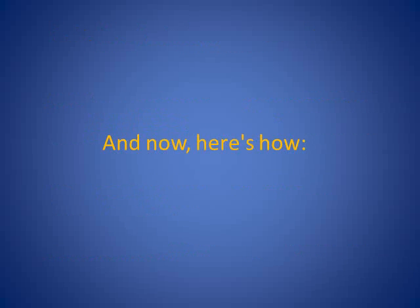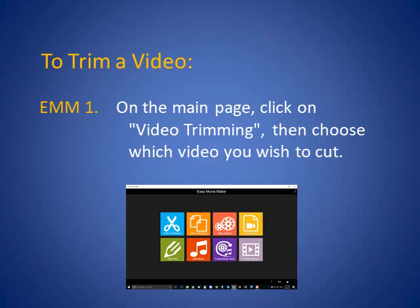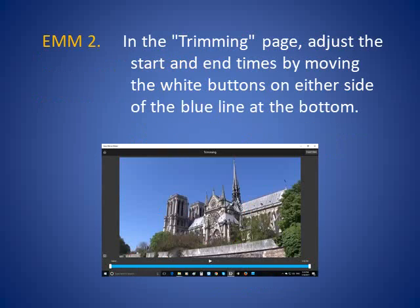And now, here's how. To trim a video, on the main page, click on Video Trimming — that's the scissors icon. Then choose which video you wish to cut. In the trimming page, adjust the start and end times by moving the white buttons on either side of the blue line at the bottom.